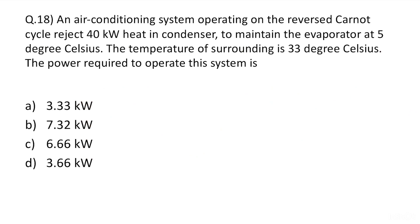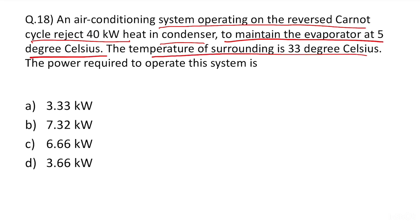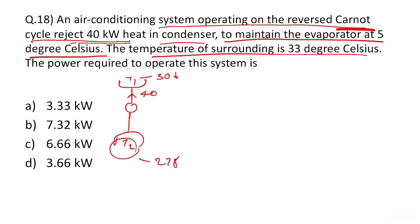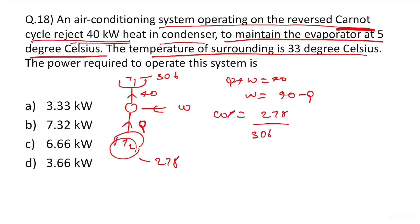Question 18: An air conditioning system operating on the reverse Carnot cycle rejects 40 kilowatt in the condenser to maintain the evaporator at 5°C. The surrounding temperature is 33°C = 306 K, evaporator is 278 K. We have Q + W = 40, so W = 40 − Q. First find COP based on temperature: COP = 278 / (306 − 278).